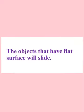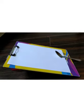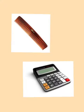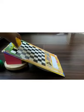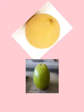Students, the objects that have a flat surface will slide. Such objects are spoon, comb, and calculator. The objects which have a curved surface will roll. Such objects are lemon, muskmelon, sweet lime, watermelon, etc.